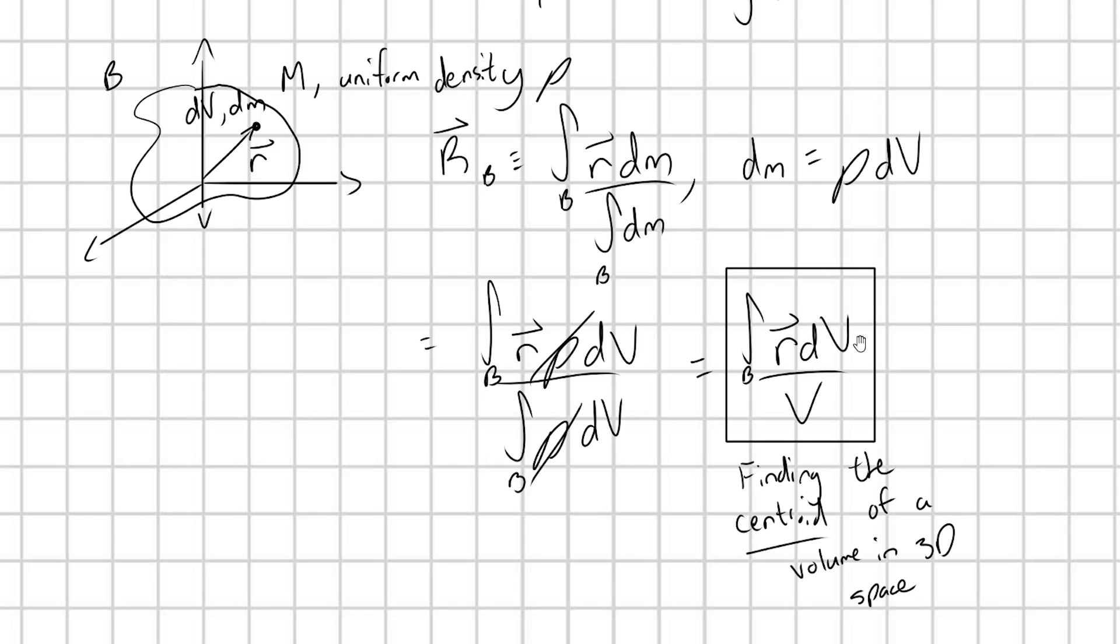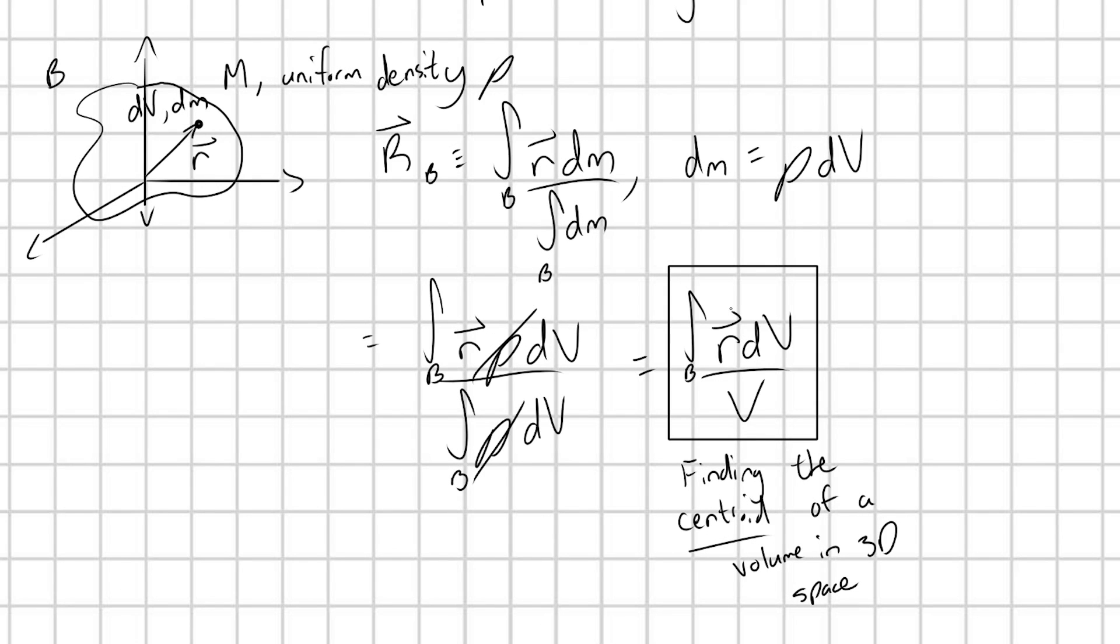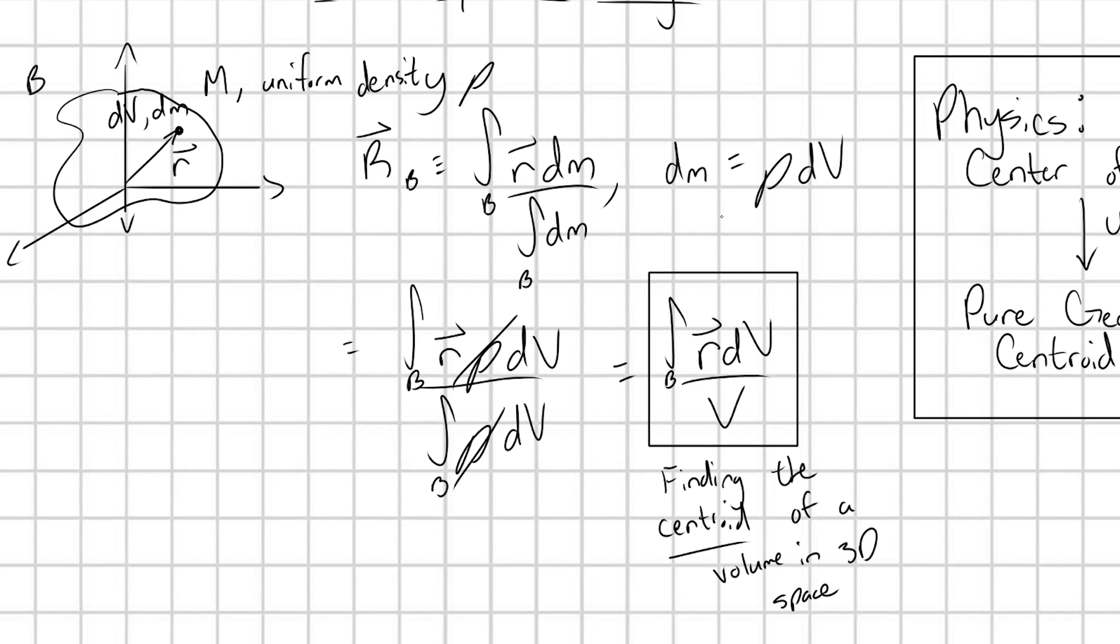And of course, we would derive the same thing if we were integrating over an area or a 2D object. We have this integral form of a centroid if we assume one thing: that our object has a uniform mass density.